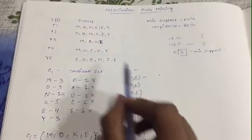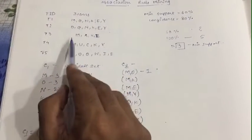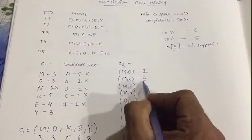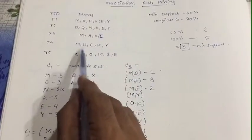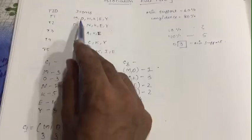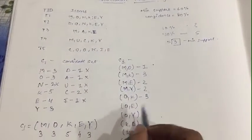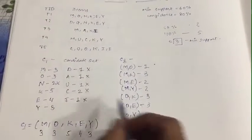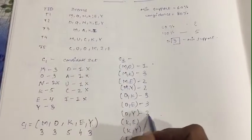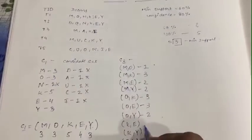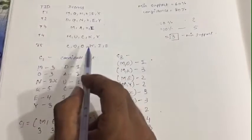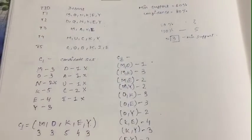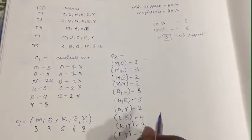Now check each pair: MO — M and O coming together: one, only one transaction. MK — M and K coming together: one, two, three. ME — one, two, three. OE — one, two, three. OY — one, two, five. KE — one, two, three, four. KY — one, two, three. EY — one, two.